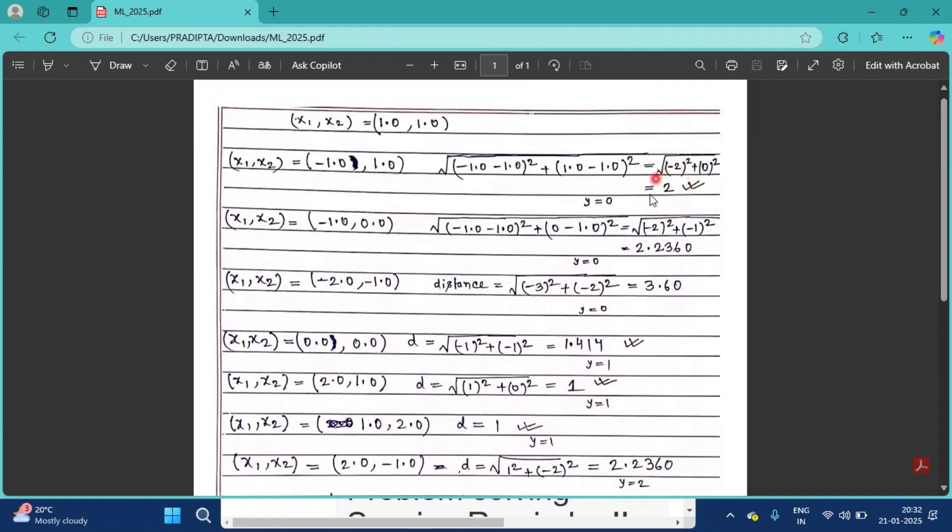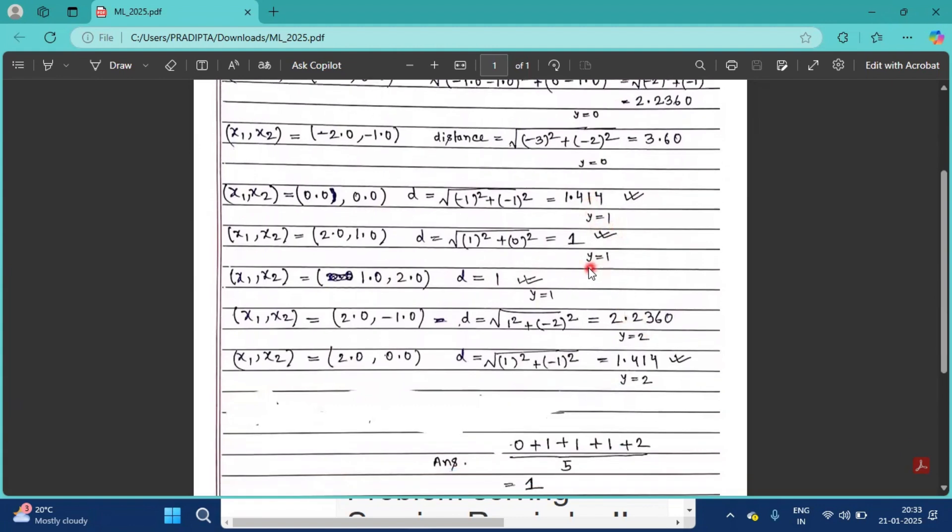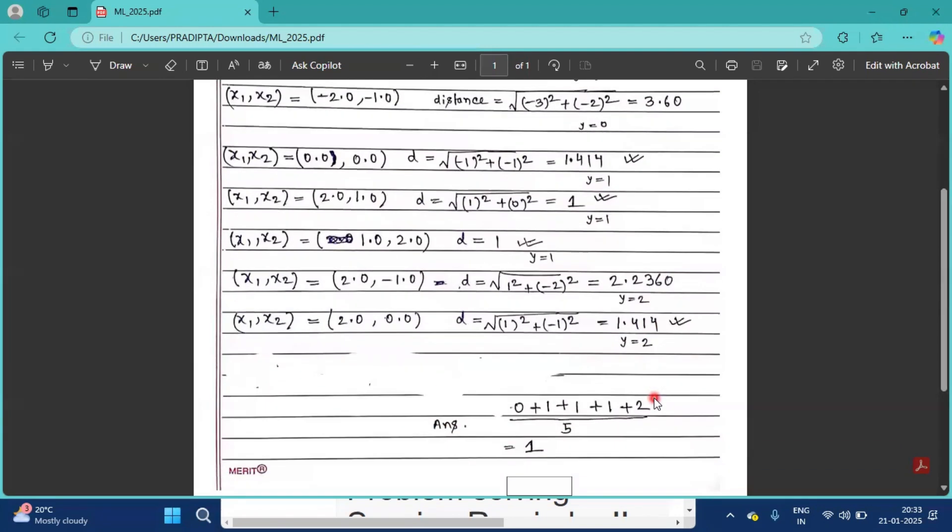Now for each point there is a y value. Y is equal to zero for this point, y is equal to one for this point, y is also one for this point, y is equal to two. So for the five cases we have to add this five value and divide it by five because k equals five.